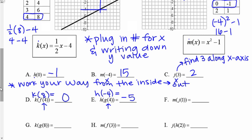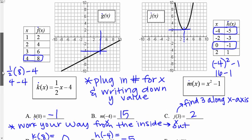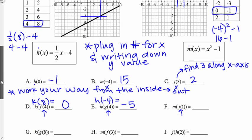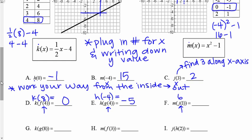Let's do f. First I'm going to do j of one, and then I'll do m of that answer. j of one is six. Now I work my way to the outside and I'm doing m of six. m of six is done using the equation: six squared minus one, so 36 minus one gives me 35.